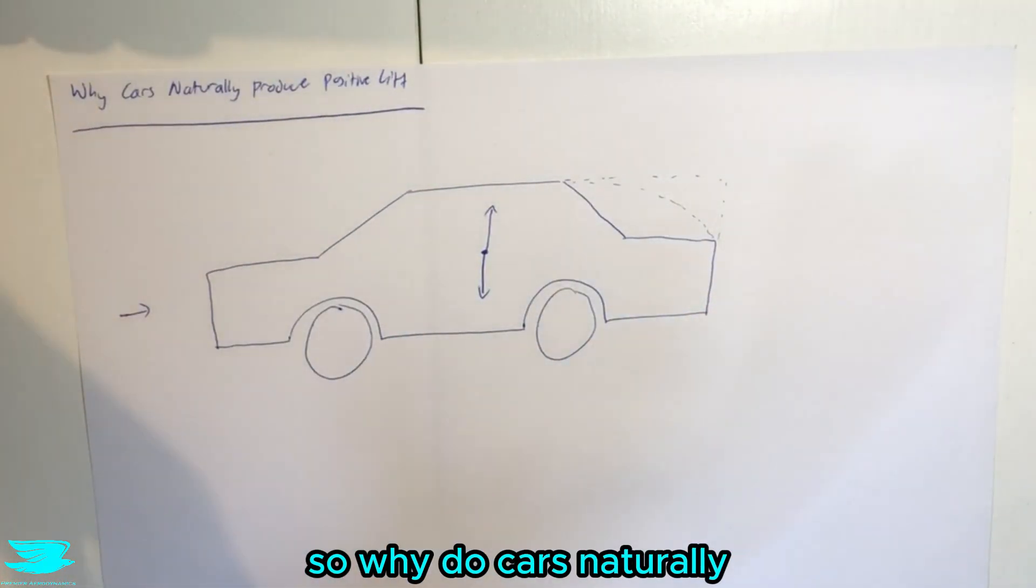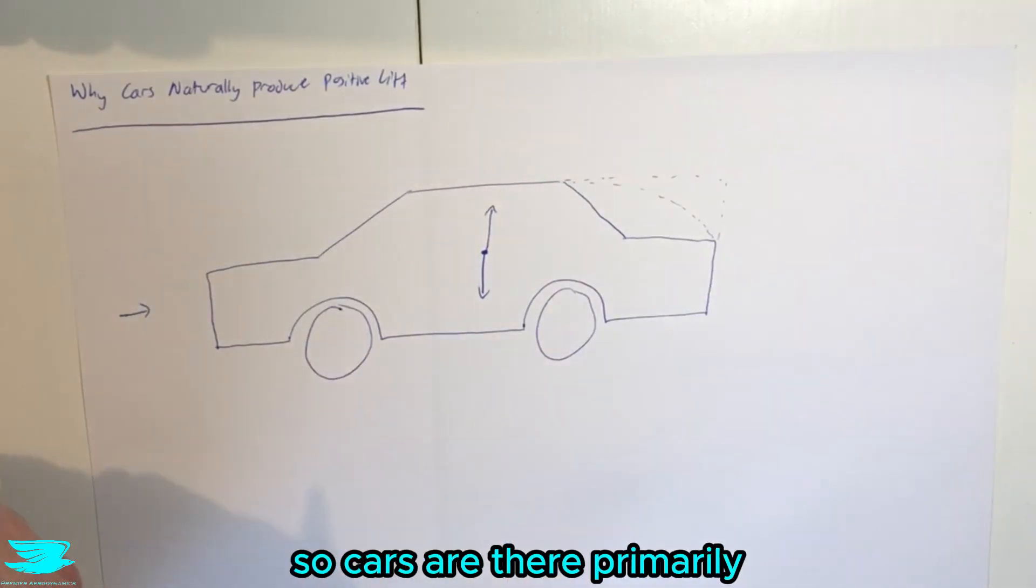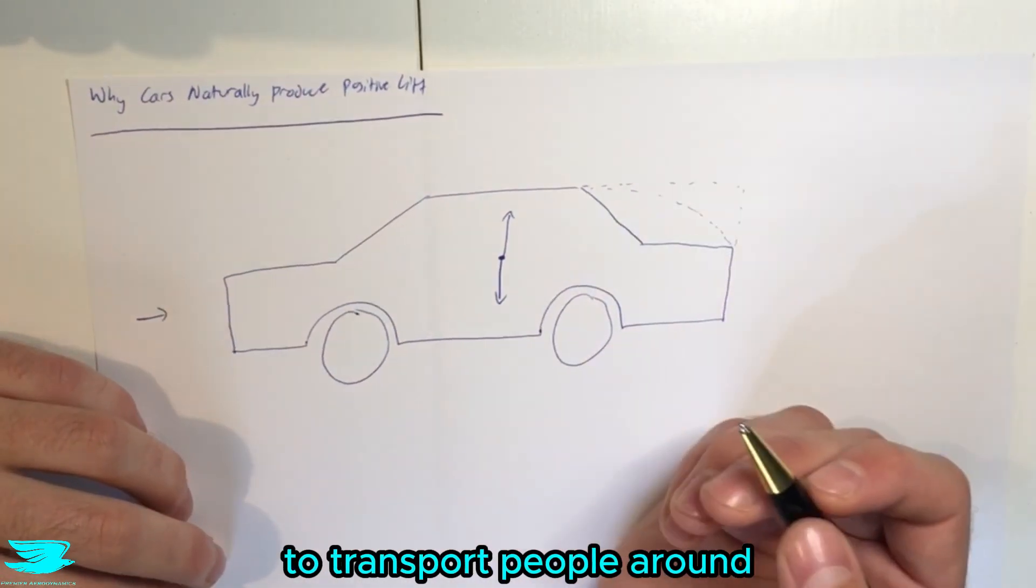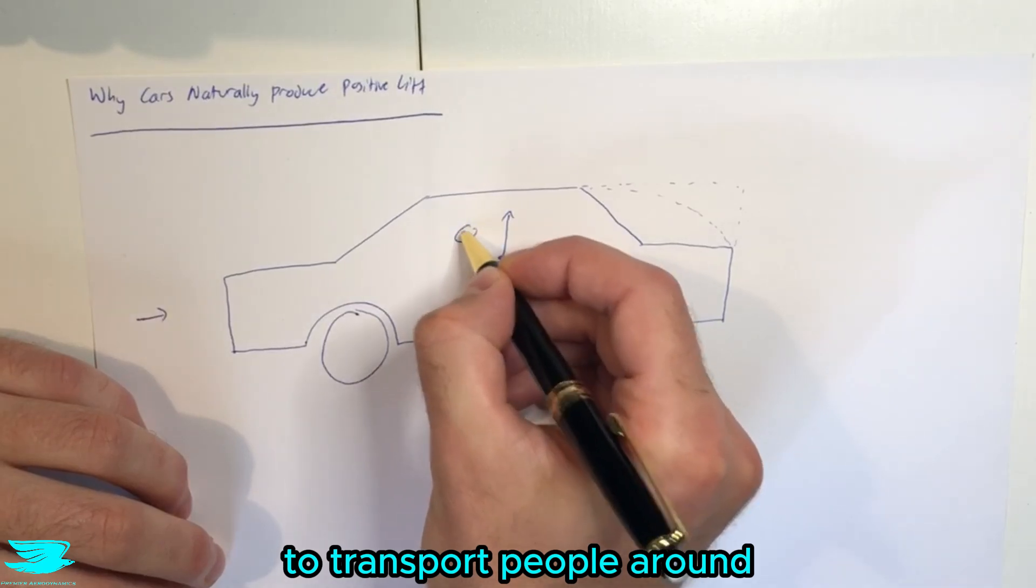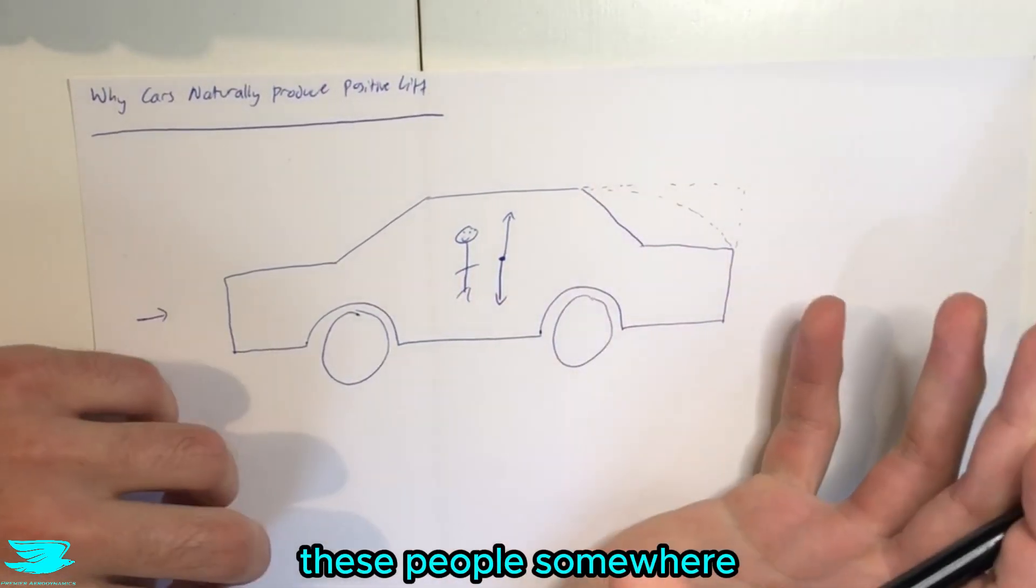So why do cars naturally produce positive lift? Well, it really comes down to the people. Cars are there primarily to transport people around. You have a person here driving along and you need to house these people somewhere.